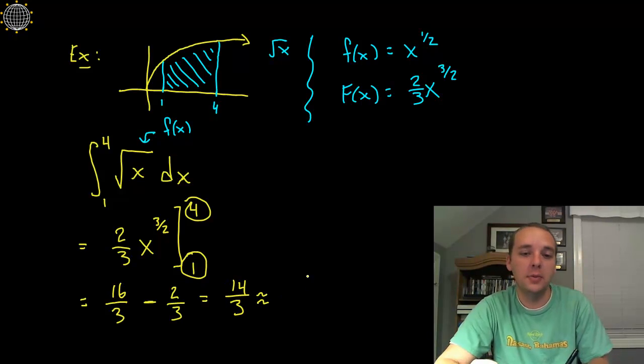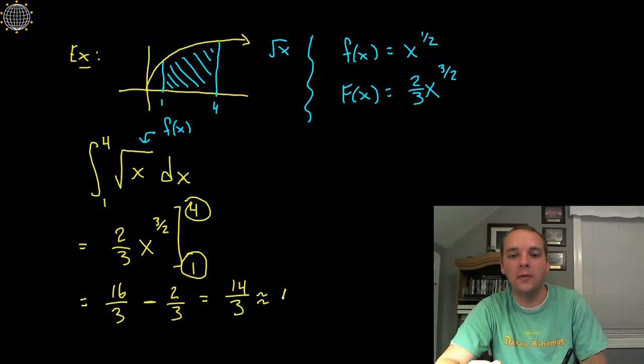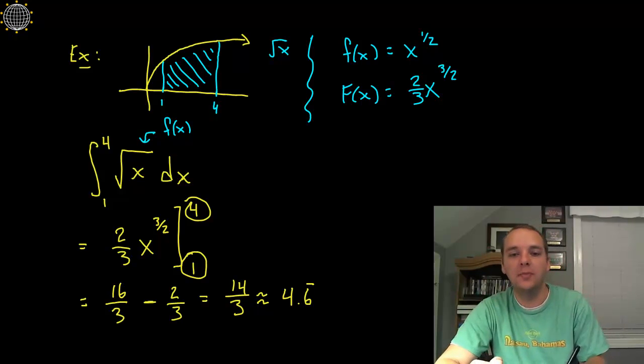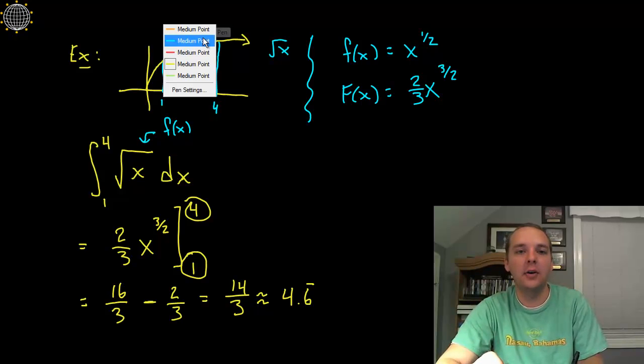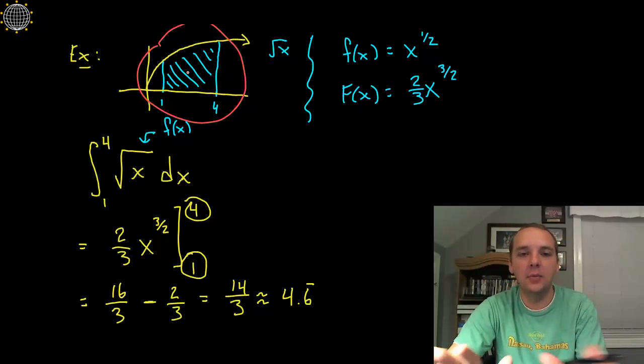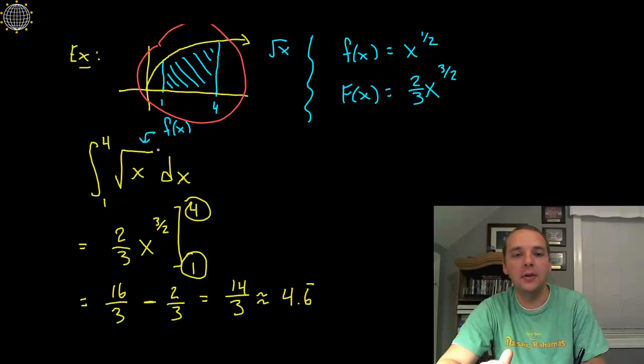So this would be 16 thirds minus 2 thirds would be 14 thirds, which is approximately, let's see what would that be, 4.6 repeating, right, 4.666 repeating or so. So that, this would be the exact perfect area under the curve, no approximations whatsoever, and we did that completely by hand, using the fundamental theorem of calculus. You take the anti-derivative, capital F of B, minus capital F of A, and we're done.